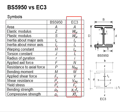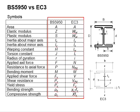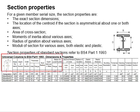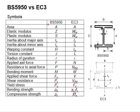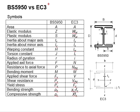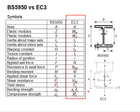In terms of symbols for section properties, you need to be very familiar with the differences in symbols between the two standards. You will frequently need to refer to section property tables given by BS, and the values obtained from those tables must be adopted into the equations in Eurocode 3.